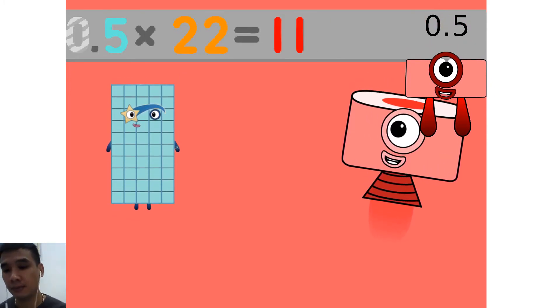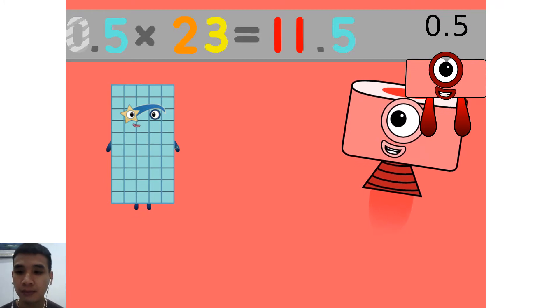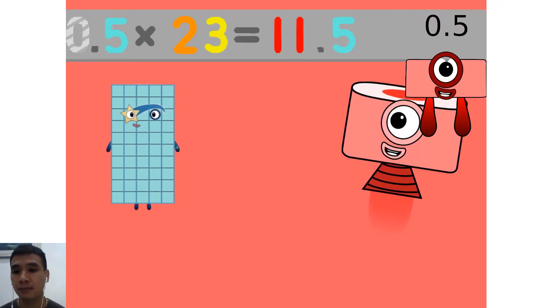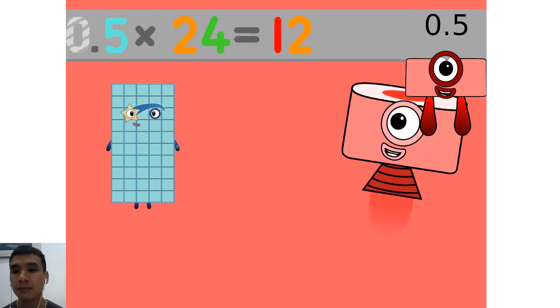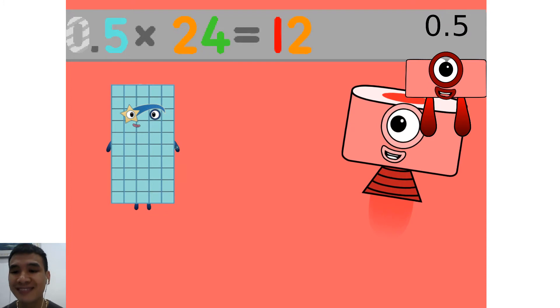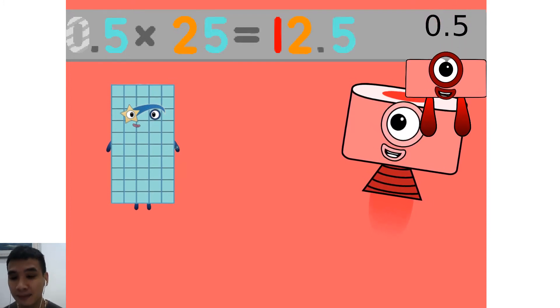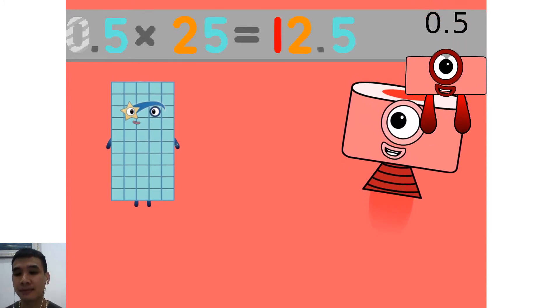0.5 times 22 equals 11. 0.5 times 23 equals 11.5. 0.5 times 24 equals 12. 0.5 times 25 equals 12.5.